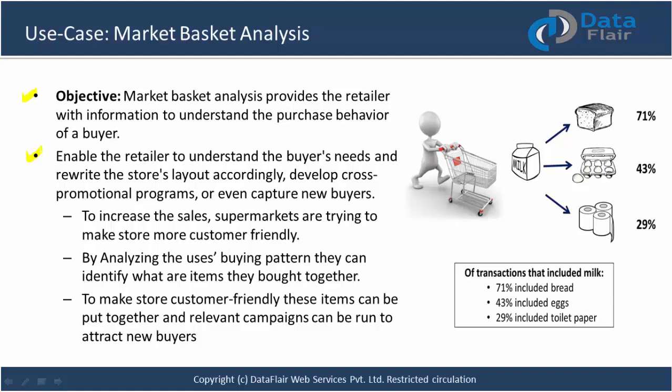For example, if a person is purchasing milk and bread, what is the probability that they will also purchase butter or eggs? We analyze the customer's basket: of all transactions that include milk, 71% also include bread, 43% include eggs, and 29% include toilet paper. By analyzing historical data from the last 10 years, we can understand users' buying patterns.